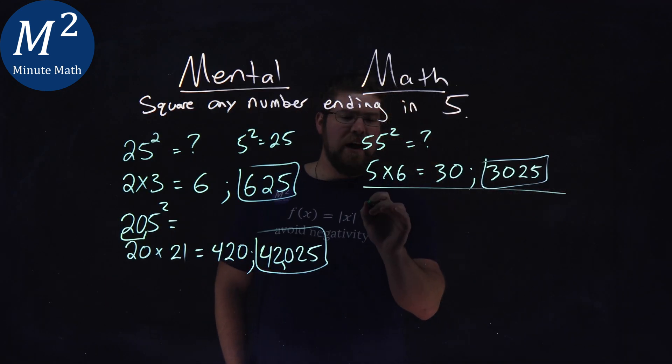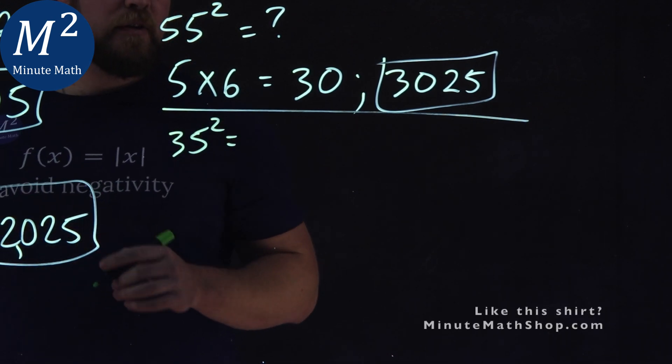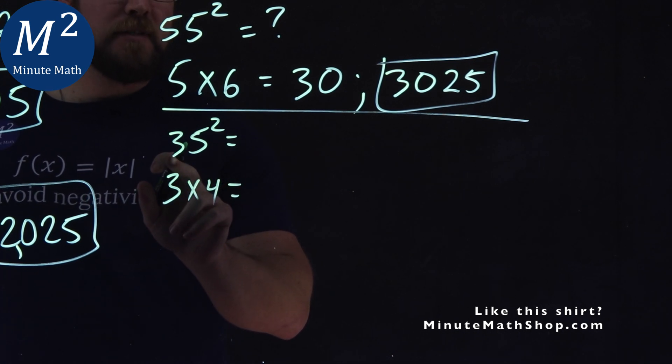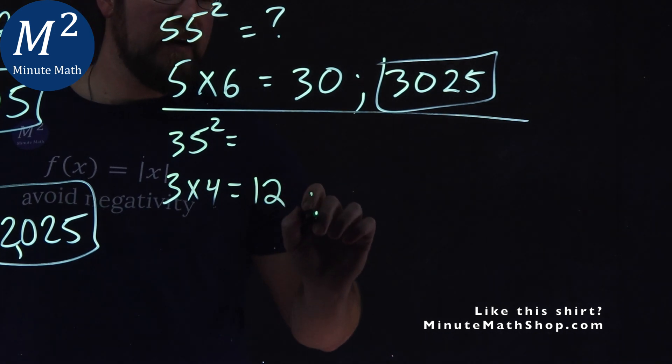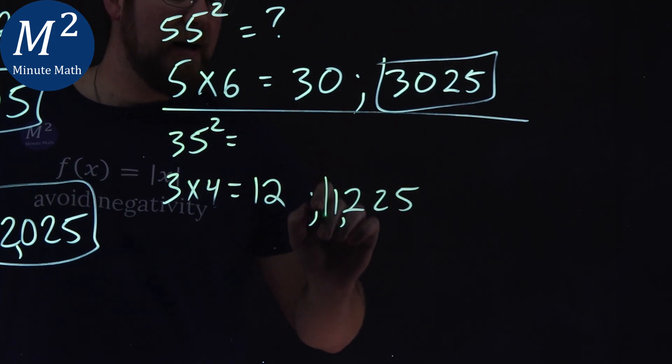What about 35? So 35 squared, pretty easy to check here. We have 3 times a 4 out front, right? First digit is 3, multiply it by one more, 4. We got a 12. Then, a 1225 is the answer for 35 squared.